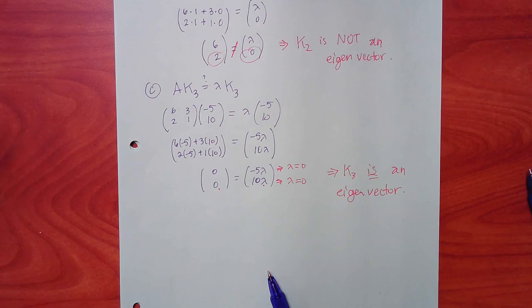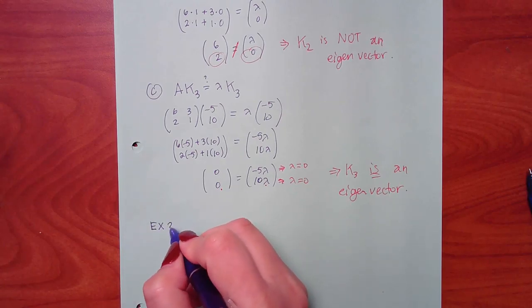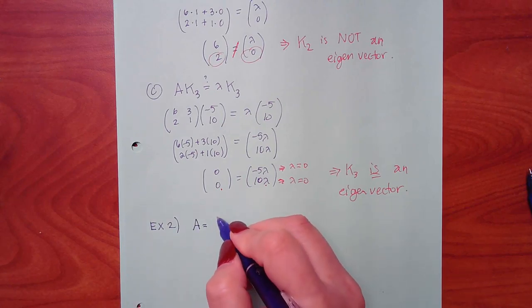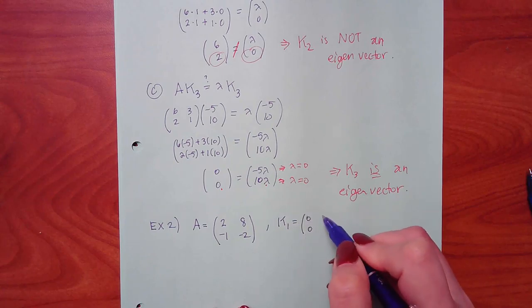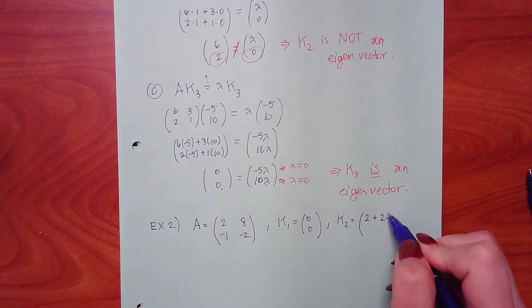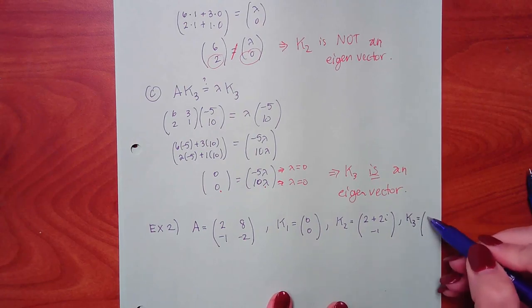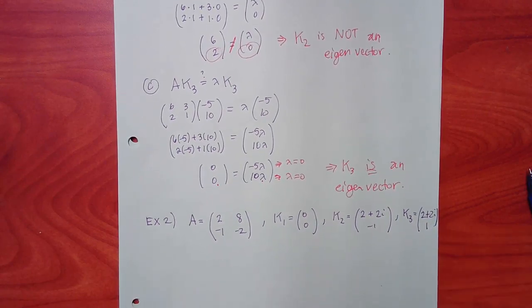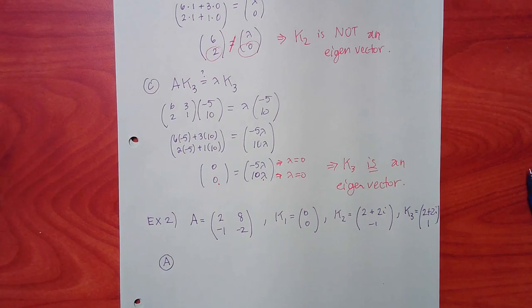Things can get complicated — I want to do another example where the solutions are imaginary. It's the same thing essentially; I just want you to see what it looks like when I throw i's in there. This time my A is going to be 2, negative 1, 8, negative 2. K1 is going to be 0, 0. K2 is going to be 2 plus 2i and negative 1. K3 is going to be 2 plus 2i and positive 1.